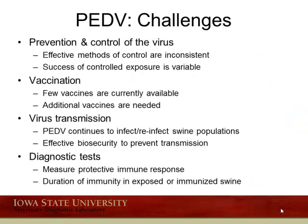PED challenges that still face our swine industry are fairly extensive. Concerns regarding prevention and control remain: PED infection control methods are currently inconsistent, and success of controlled exposure feedback of positive material is variable. Few vaccines are currently available, and additional efficacious vaccines are needed. Regarding virus transmission, the challenge remains how PED continues to infect — and as recently seen in a herd in Indiana — reinfect swine populations after they've gone negative, despite effective and extensive biosecurity measures in place. Diagnostic testing for specific questions, such as how to measure a protective immune response and the duration of immunity from vaccines or natural infection, also remains a challenge.